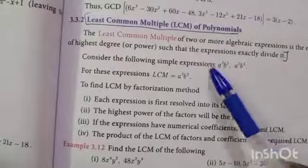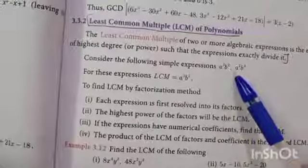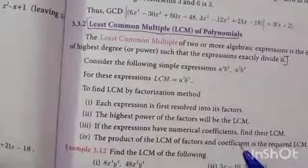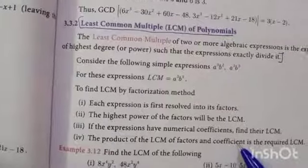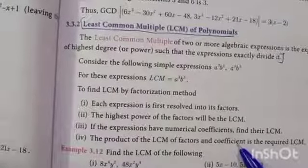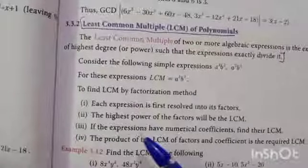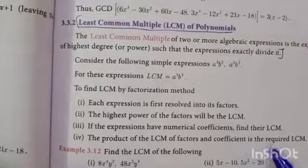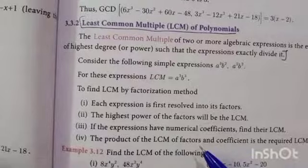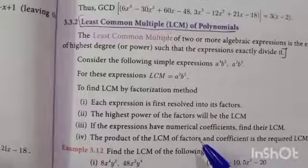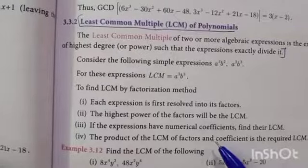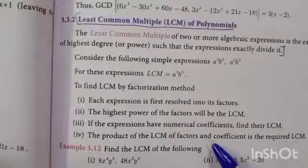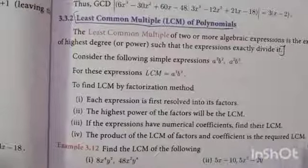If the expressions have numerical coefficients, find their LCM separately. If coefficients are other than one — such as 2, 3, 4, 5, or negative numbers — we must find the LCM of those coefficients. Then the product of the LCM of the factors and the LCM of the coefficients is the required LCM.